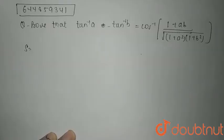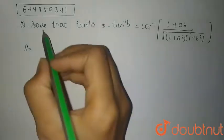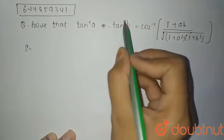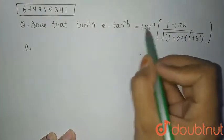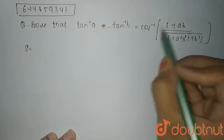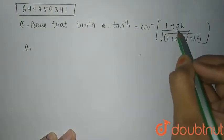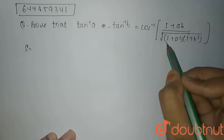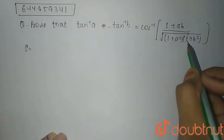Hello students. Today's question is: prove that tan inverse a minus tan inverse b is equal to cos inverse of 1 plus ab divided by root of 1 plus a squared into 1 plus b squared.